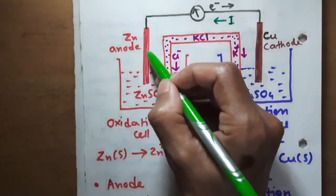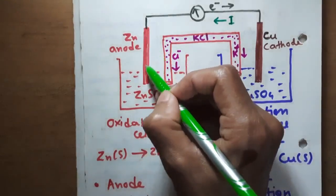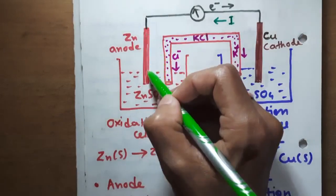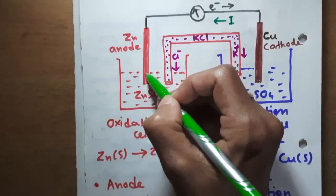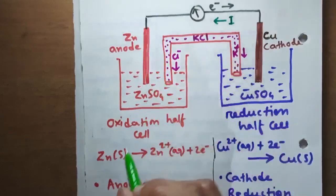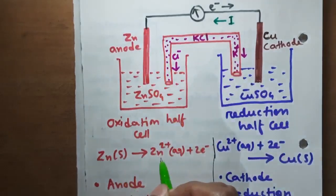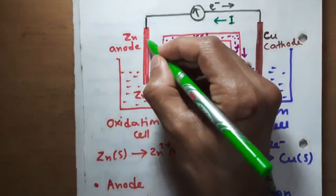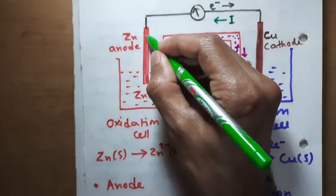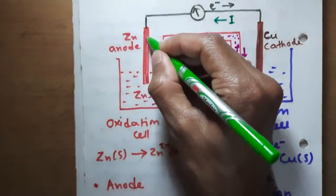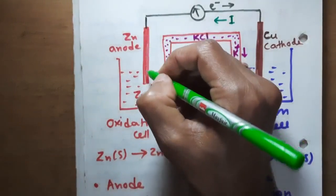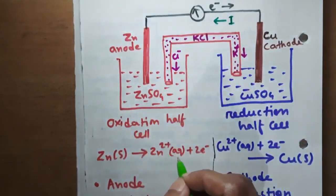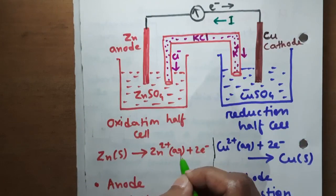The zinc atoms present in this electrode will become zinc 2 plus ions in aqueous solution.